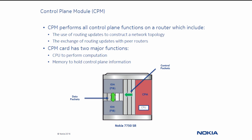The CPM also maintains states for multiple internal and external processes. As an example, BGP neighbor states and OSPF adjacency states are all maintained by the CPM. The CPM card has two major functions: CPU to perform computation, and memory to hold control plane information.